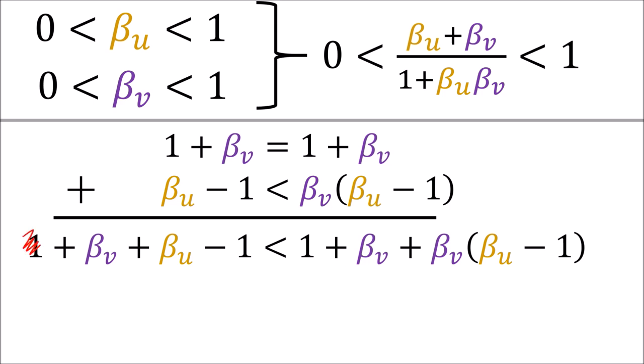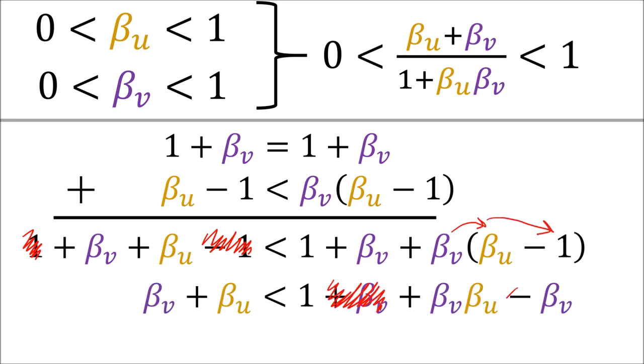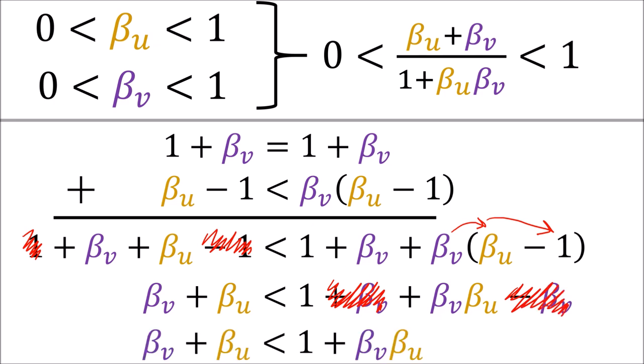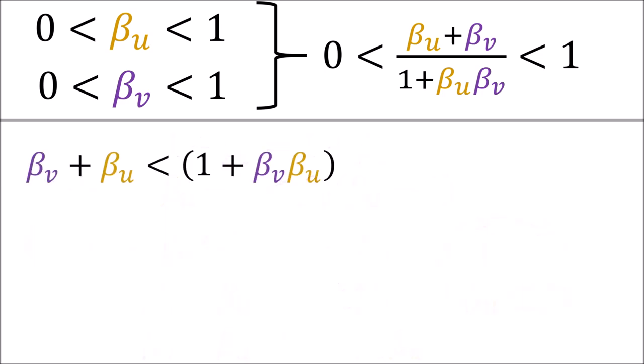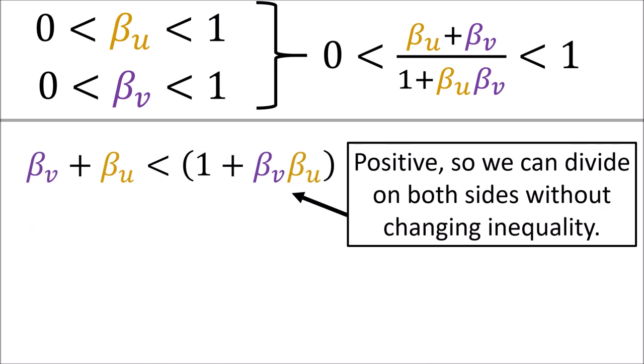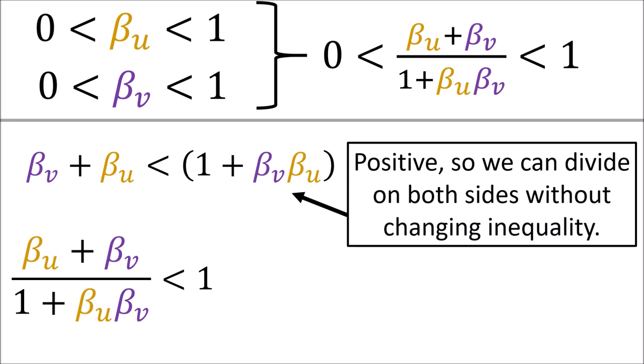Taking this inequality and adding (1 plus beta-v) to both sides doesn't change the inequality. On the left-hand side, the positive 1 and negative 1 cancel out. On the right-hand side, after distributing beta-v, the positive and negative beta-v cancel out. We're left with (beta-v plus beta-u) is less than (1 plus beta-v times beta-u). Since (1 plus beta-v times beta-u) is positive, we can divide both sides by it, giving us the conclusion that (beta-u plus beta-v) over (1 plus beta-u times beta-v) is always less than 1.